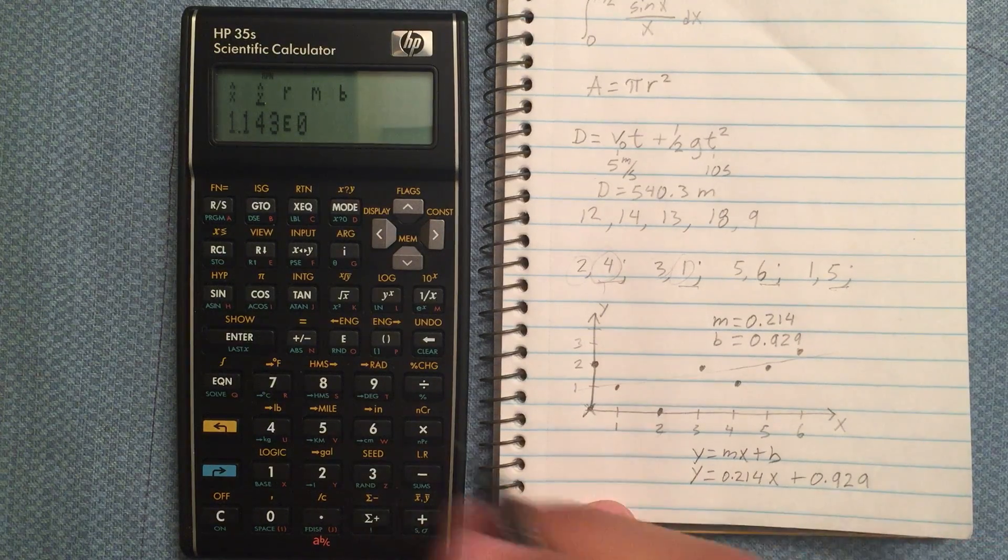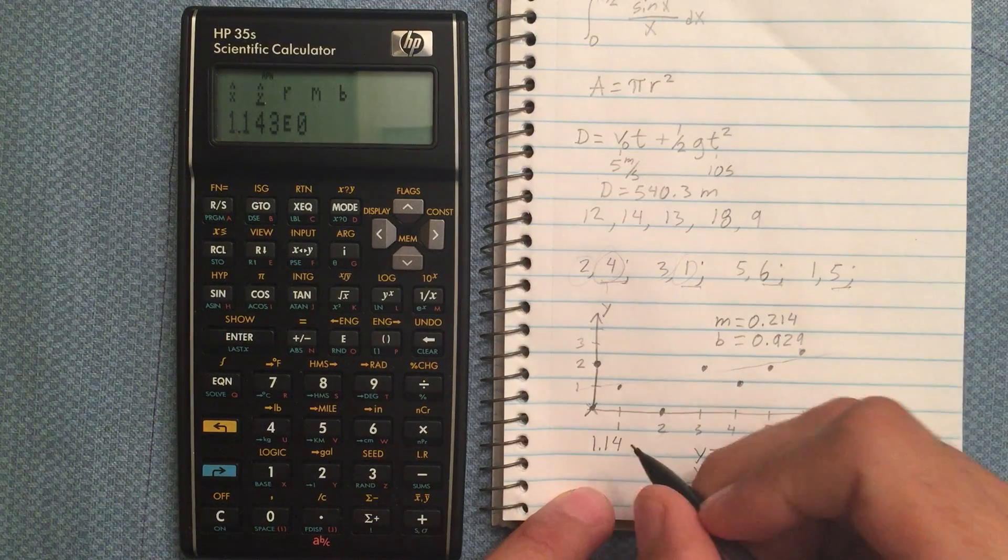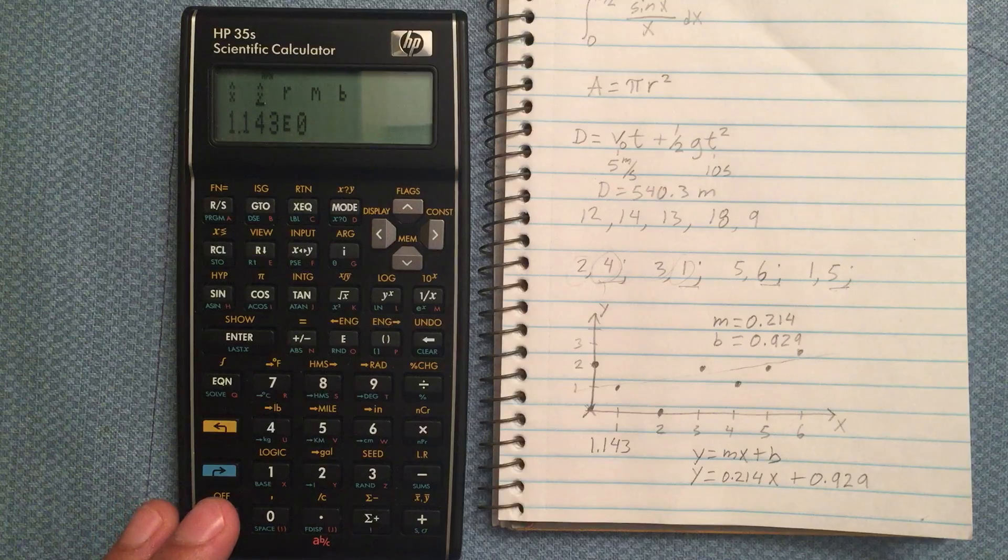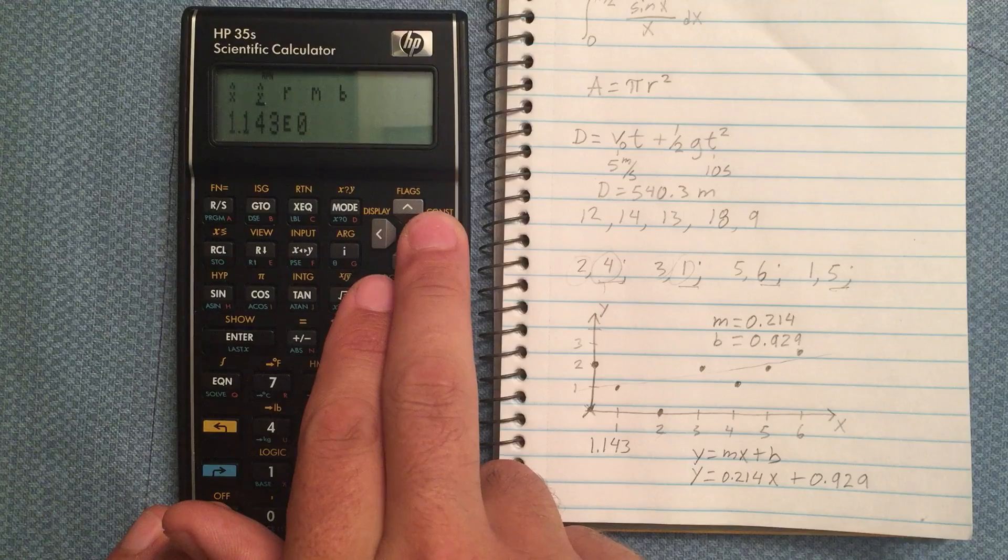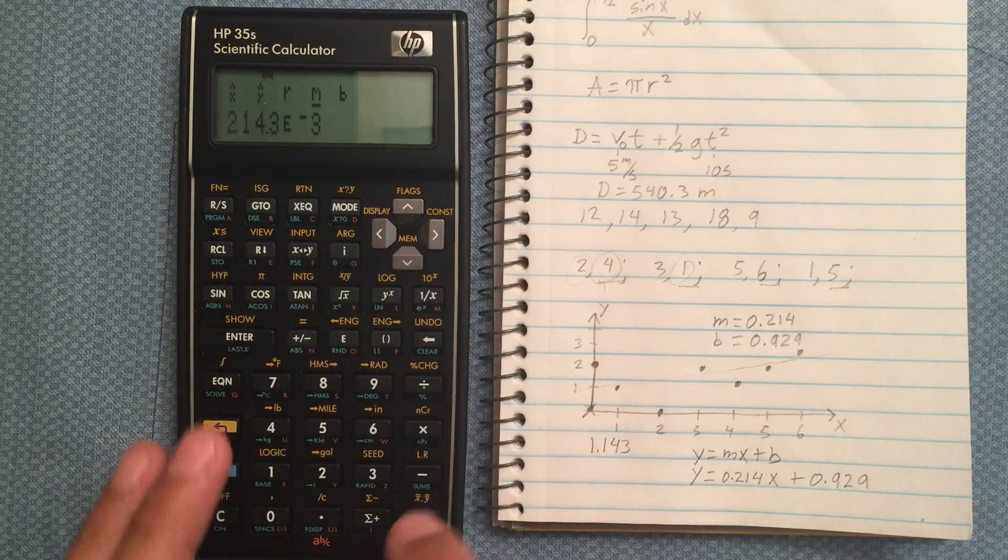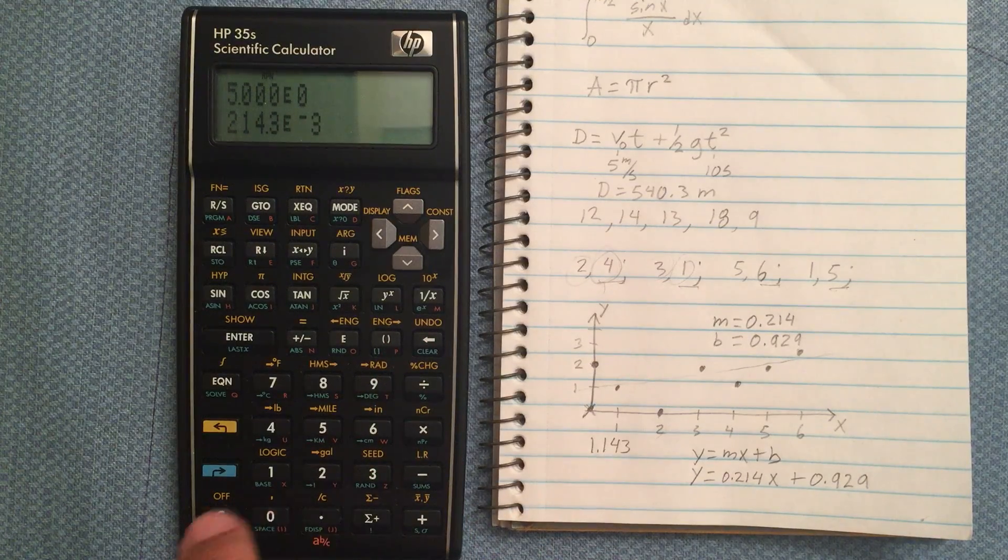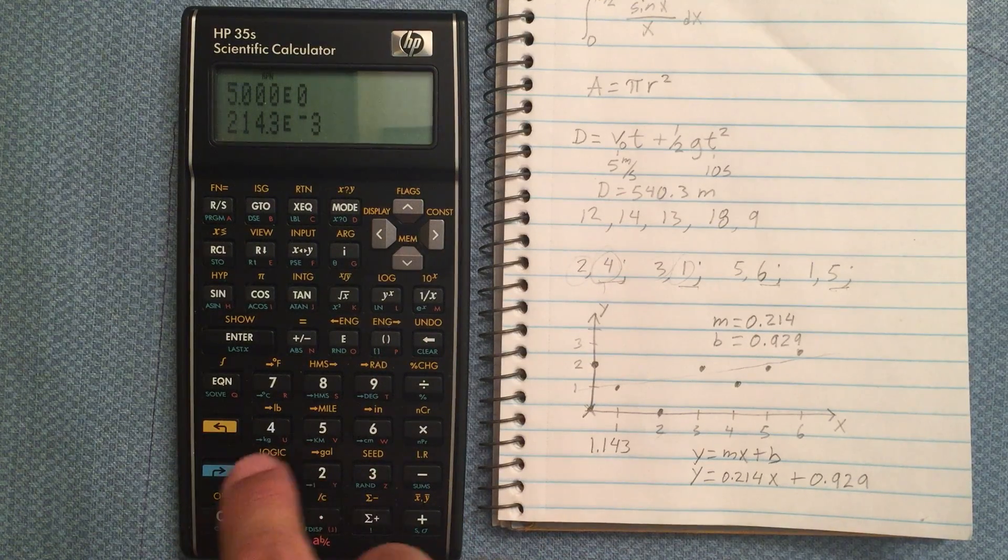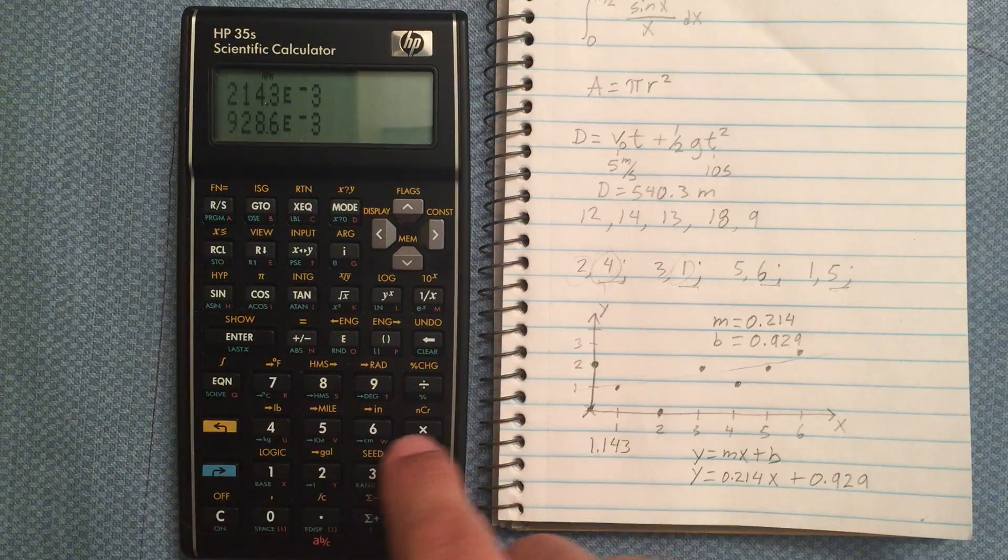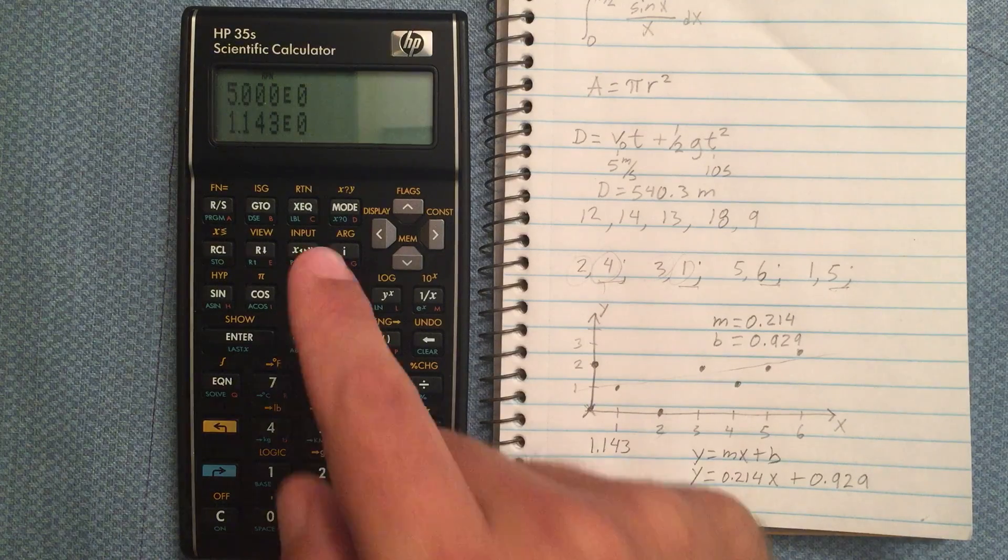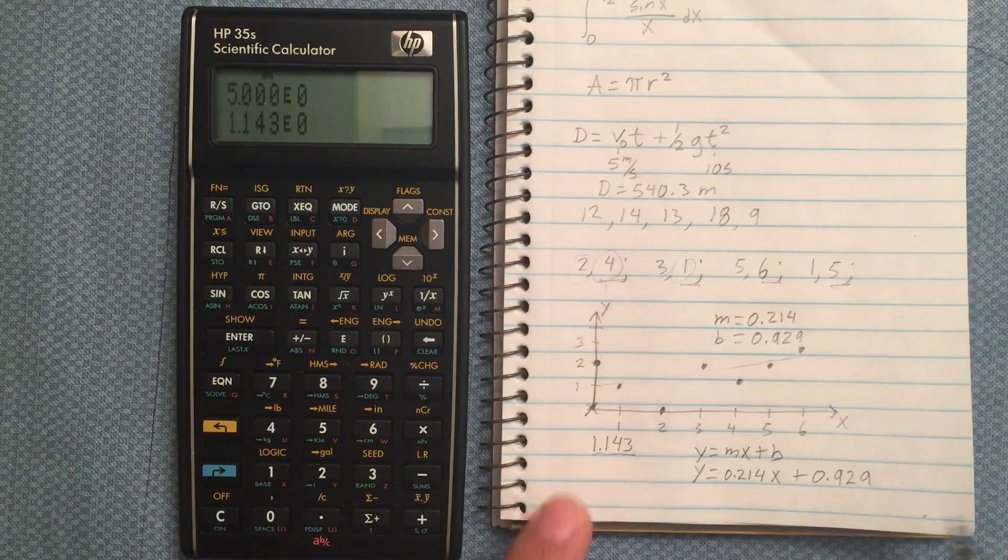Let's see if it does evaluate to that. So 1.14 is what we're looking for. So let's see. I'll just take that value. So 1 times that. And then I'm going to add 0.929. I'll just grab it from the b value here. And it gives me 1.143 as expected. So that's just a way of evaluating that equation.